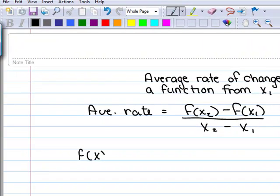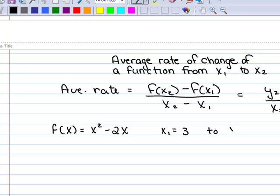So for example, f of x is equal to x squared minus 2x, and you're going to be given a starting x sub 1 and an ending x sub 2.